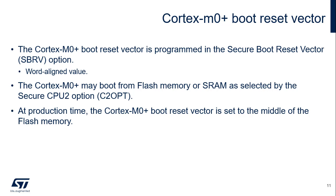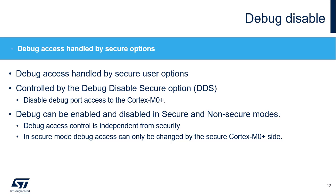The Cortex-M0 Plus boot reset vector is to be programmed in the secure boot reset vector option and the secure CPU2 option. At production time, the Cortex-M0 Plus boot reset vector points to the middle of the flash memory. In secure mode, the boot reset vector can only be changed by the secure Cortex-M0 Plus side. Cortex-M0 Plus debug access is controlled by the debug disable option bit, independent from security, and can be enabled or disabled in both secure and non-secure modes. In secure mode, debug access control can only be changed by the secure Cortex-M0 Plus side.